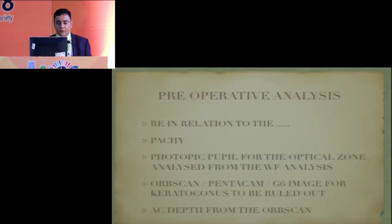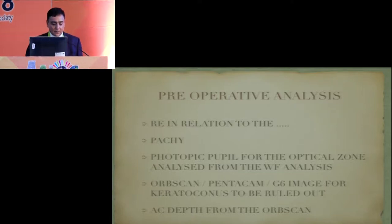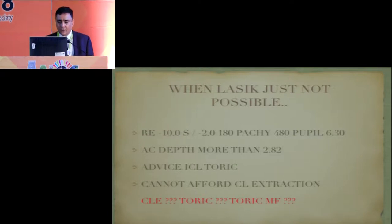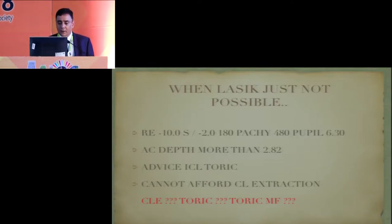In pre-op analysis, there is a refractive error and its relation to pachymetry. We need to know the photopic pupil and calculate the optical zone accordingly. It is analyzed from the wavefront analyzer. We must rule out keratoconus and get the anterior chamber depth. When LASIK is not possible — for example, a refractive error of minus 10 with 2 diopters of astigmatism at 180 and a pachymetry of 480, with a pupil of 6.3 — and if the anterior chamber depth is 2.82 (cut-off is 2.80), then this patient can be advised a toric ICL.